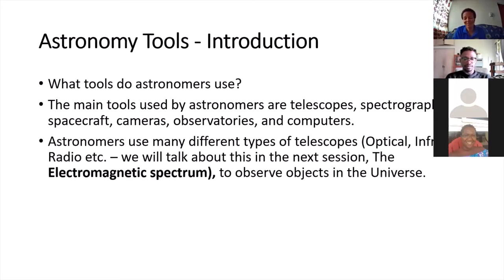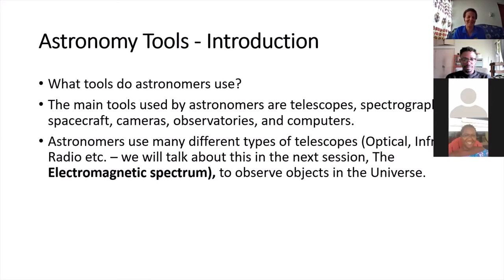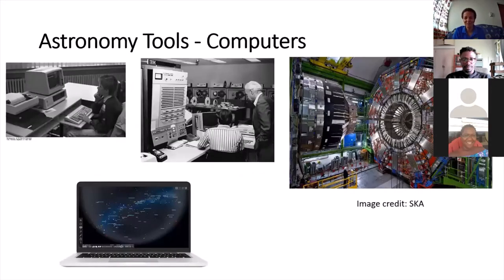There are different types of telescopes that look at different types of light, or what are called different parts of the electromagnetic spectrum. We'll actually be talking about that in another session, so you don't have to worry too much about it now — just be aware that there are many different types of telescopes.